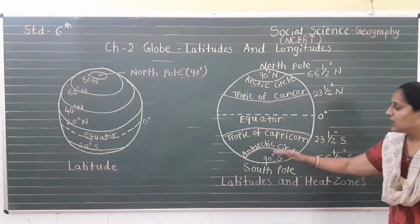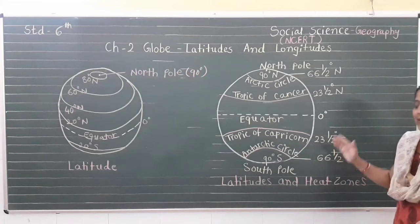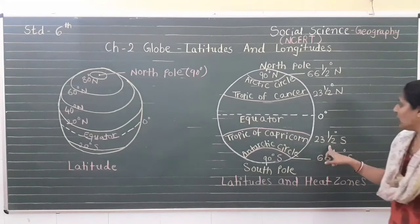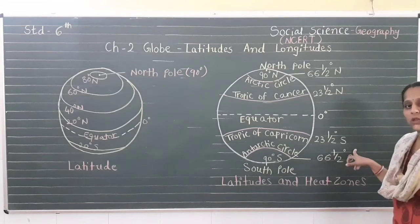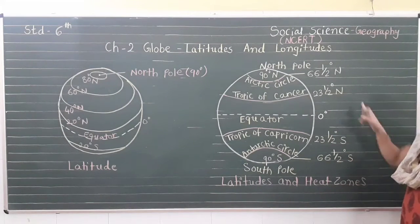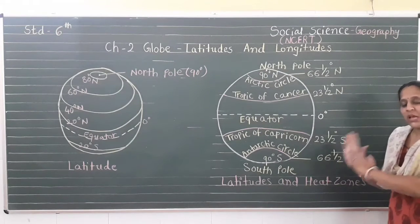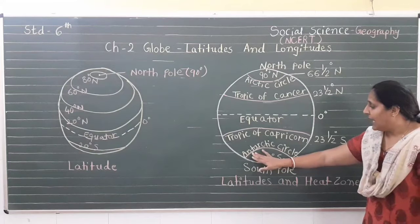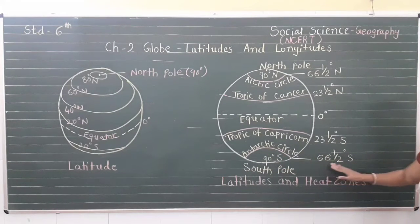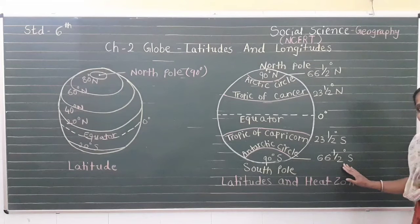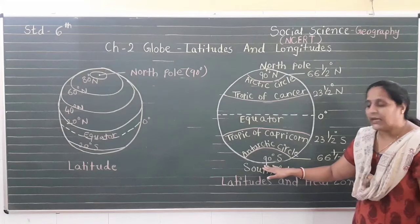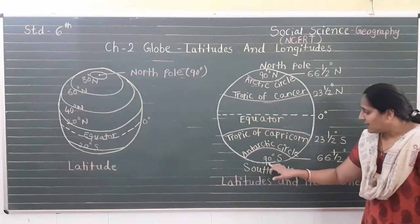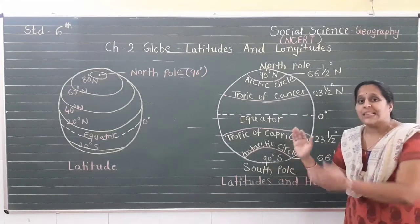In the southern hemisphere, the imaginary lines are in equal proportion: the Tropic of Capricorn in the southern part indicates 23 and a half degrees south (S means southern hemisphere). The Antarctic Circle indicates 66 and a half degrees south latitude. Below the equator, exactly in the center of the southern part, there is the south pole, which indicates 90 degrees south latitude.